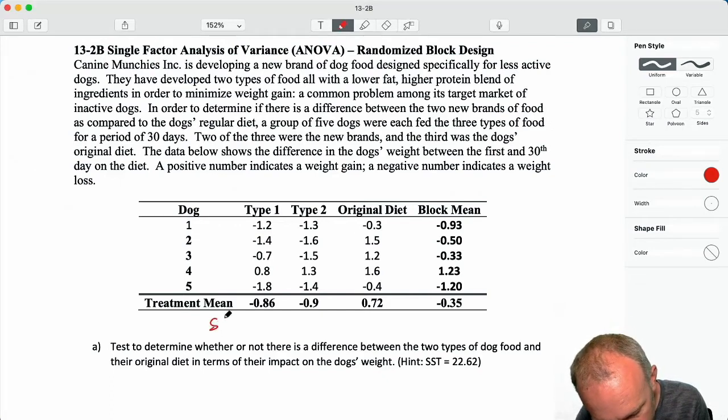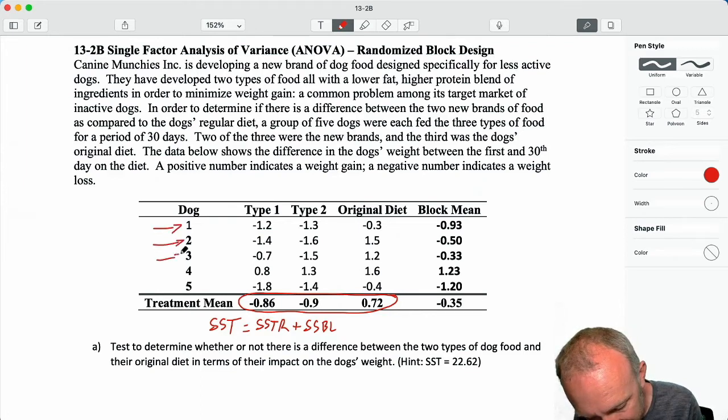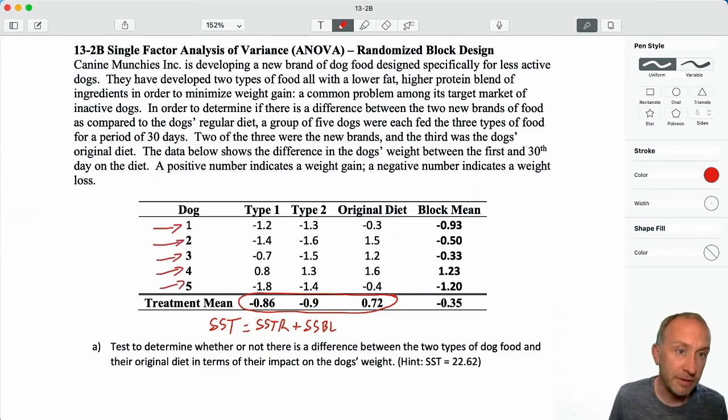We're taking the total variation that exists in this data set and accounting for any differences across treatments. Do we have evidence to show that there's a statistically significant difference across those treatments? In order to refine our estimate of sigma, that random variation in the data set, we're accounting for this other source of variation that is sum of squares due to blocks, variation that exists due to the fact that our experimental units are different.